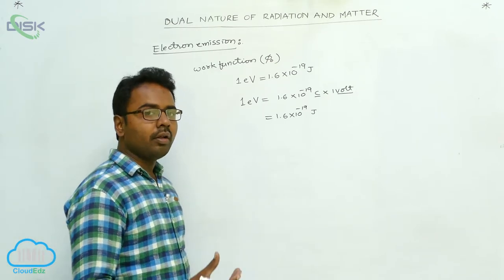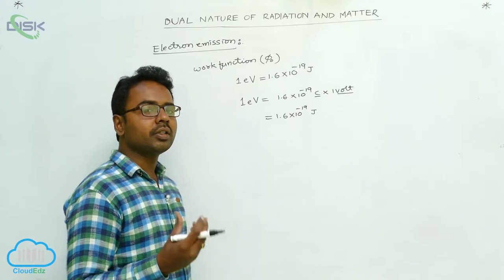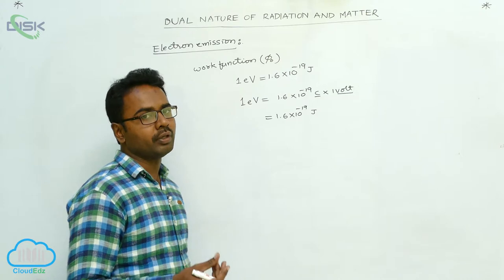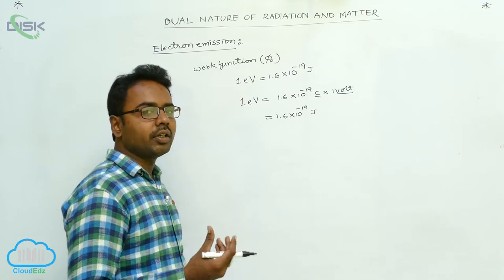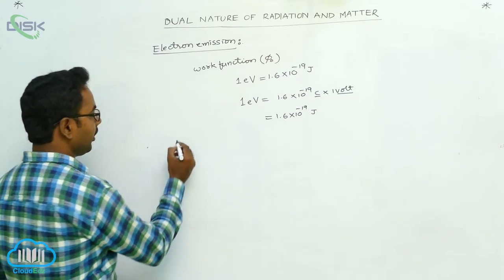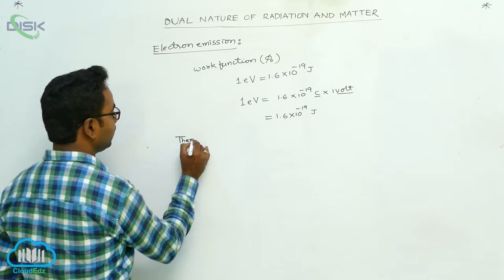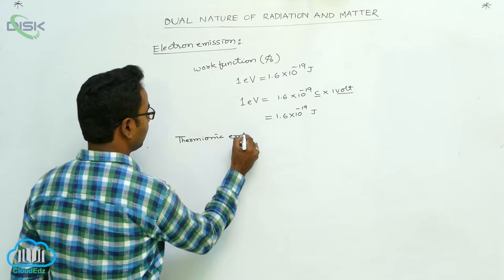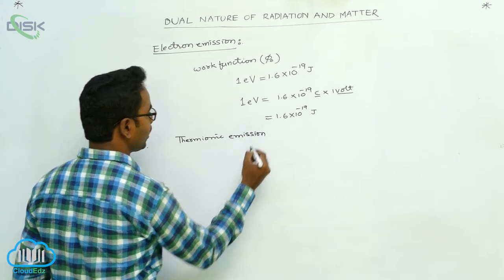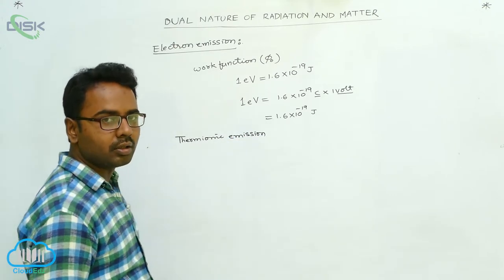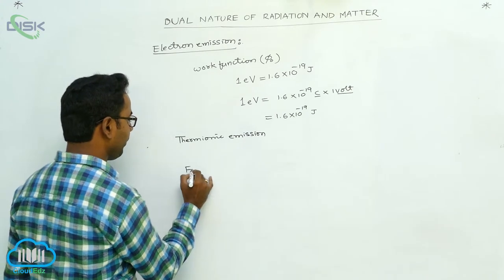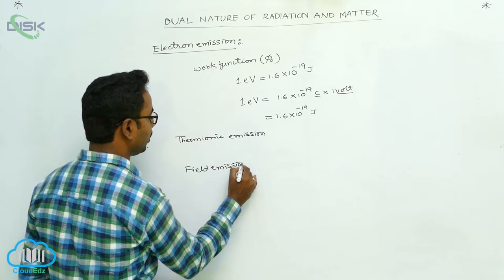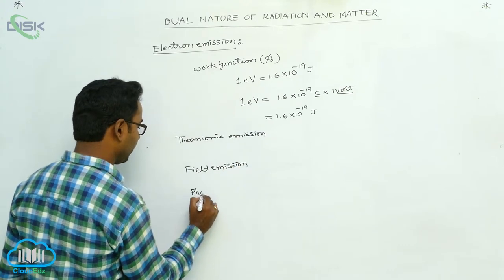We can give energy to electrons in three different ways, meaning there are three different methods of electron emission. The first one is thermionic emission, the second is field emission, and the third is photoelectric emission.